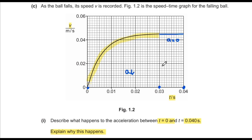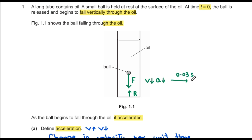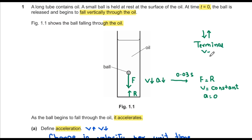The reason for decreasing acceleration: as the ball falls under a resultant downward force F, the oil offers an increasing resistance. This resistance causes the velocity increase to slow, hence acceleration decreases. After 0.03 seconds, the downward resultant force and the resistance become equal, velocity reaches a constant value, acceleration is zero — this constant velocity is known as terminal velocity.